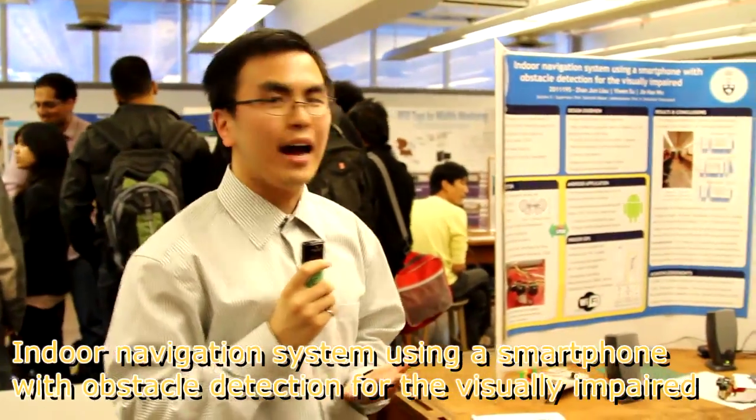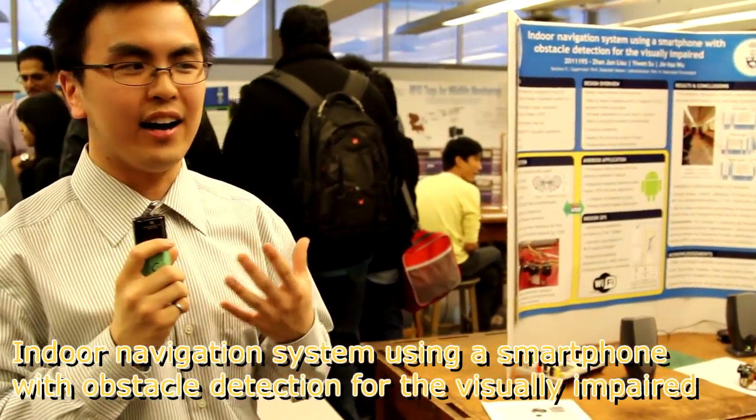Basically what we have is we integrate an obstacle module with an Android phone that's running GPS. We walk around with the GPS and the obstacle sensor. You go close by the elevator and it says elevator detected in front. You are right next to a wall, it will say there is a wall to your right.